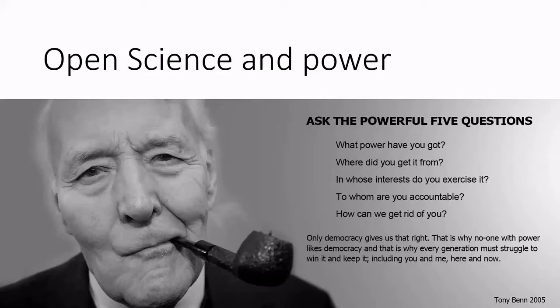This leads to the problem that if the research community is not trying to define what these things are, it leads to an imbalance in the power at play. The old Labour MP Tony Benn used to discuss power in a political context and said you have to ask the five powerful questions: What power have you got? Where do you get it from? Whose interest do you exercise it? To whom are you accountable? And finally, how can we get rid of you? These are democratic rights — and if you apply them to the present system, you end up going down some very interesting rabbit holes.